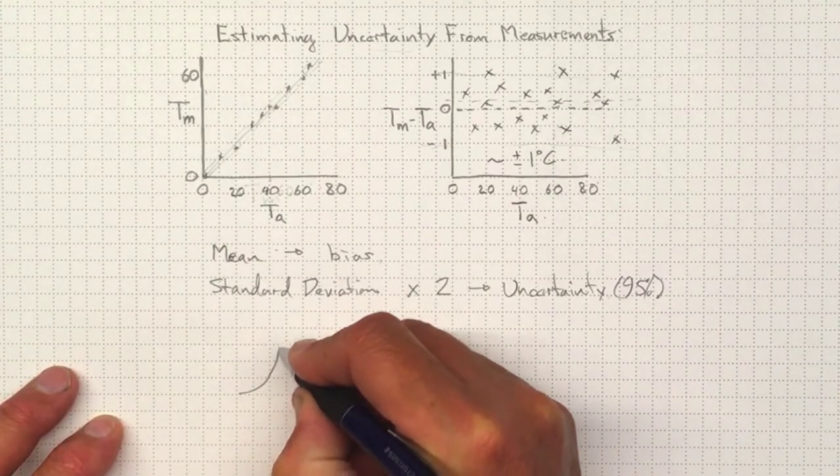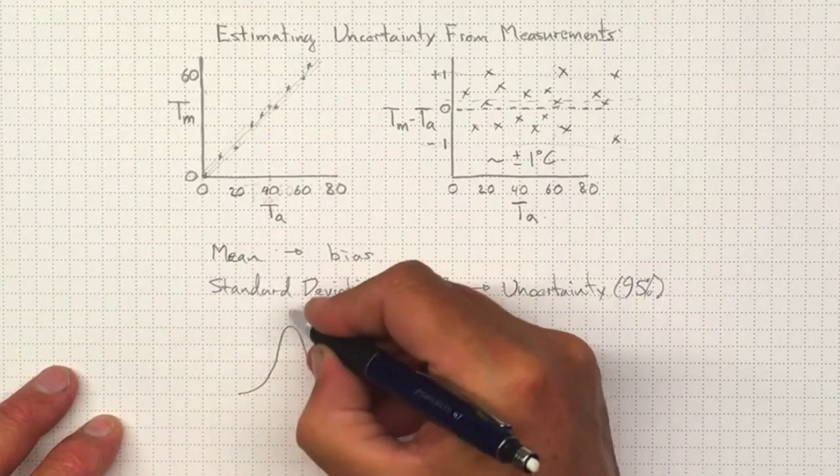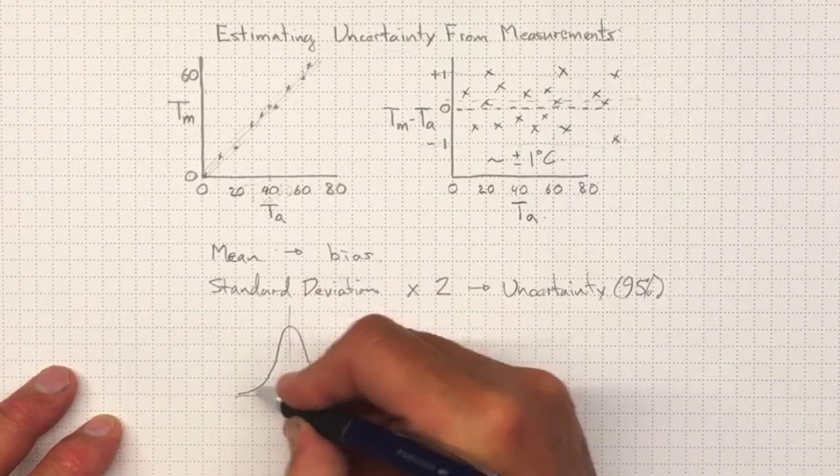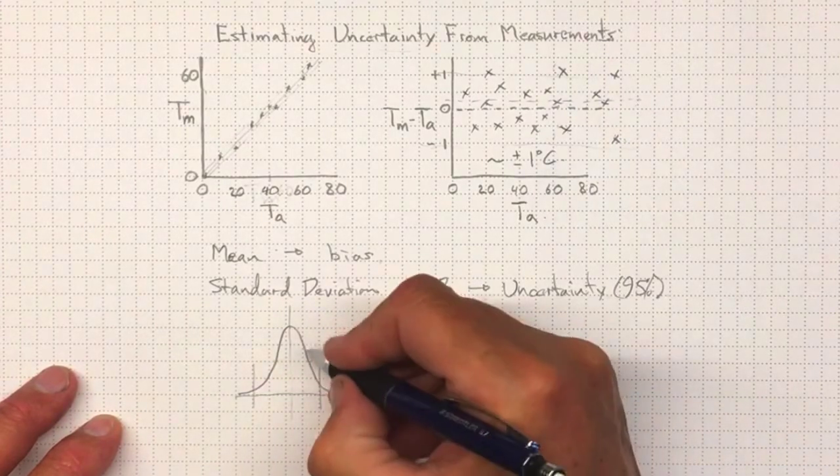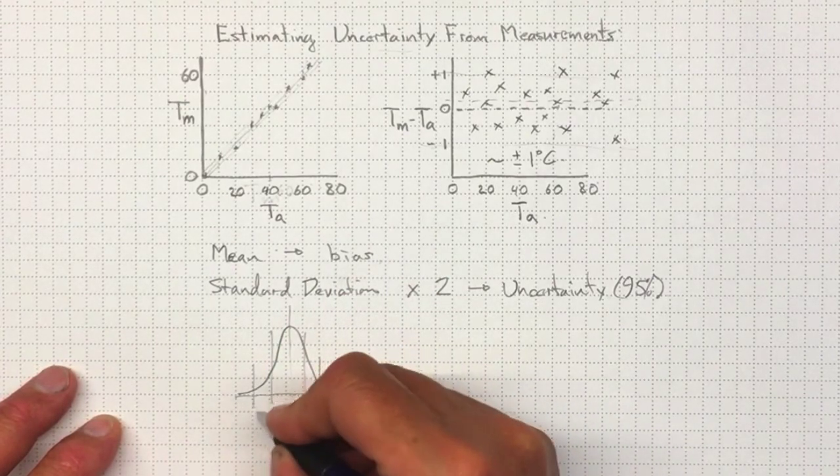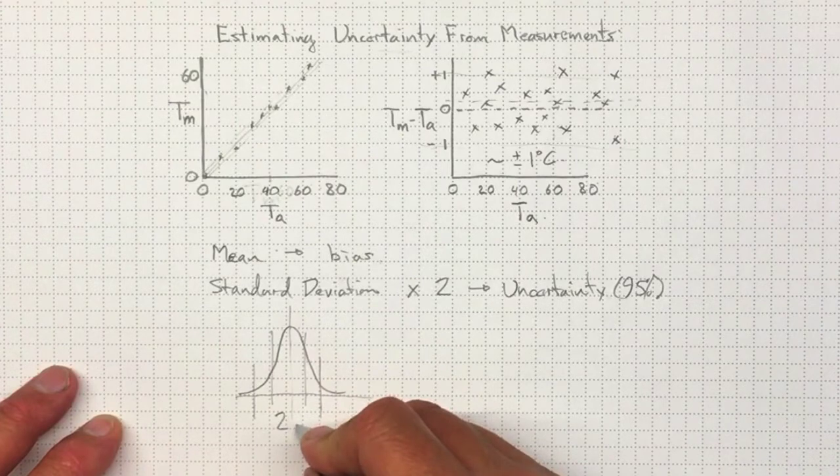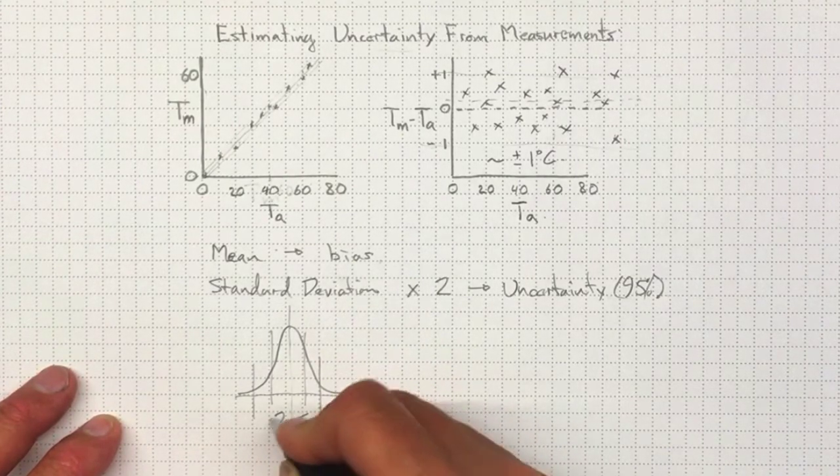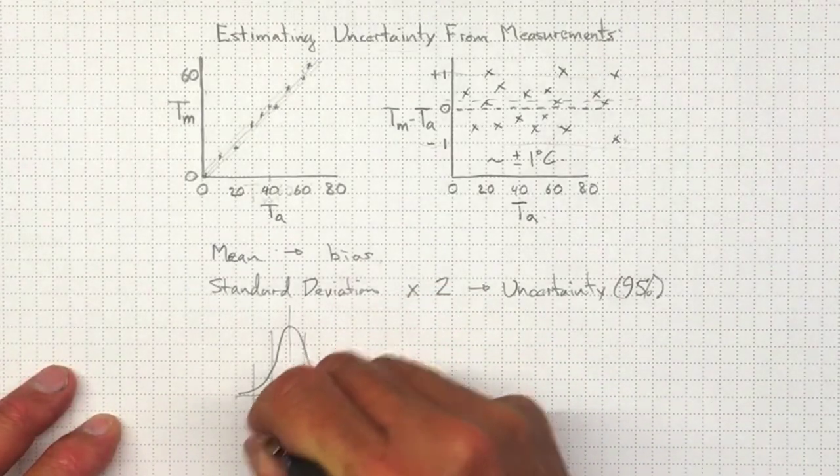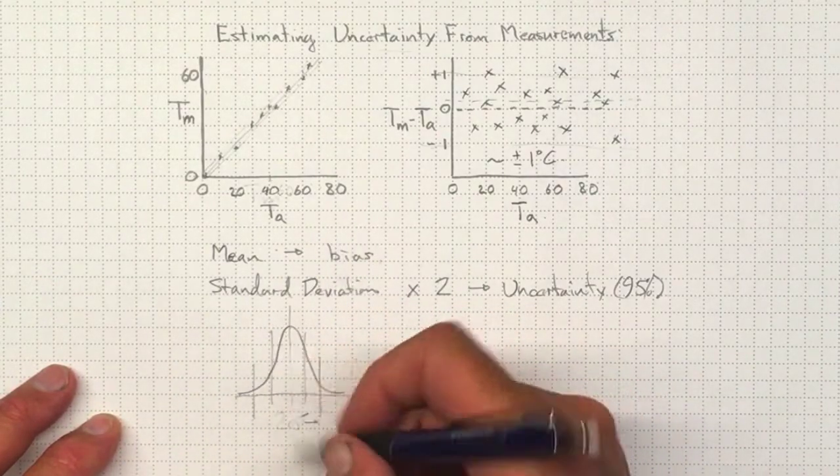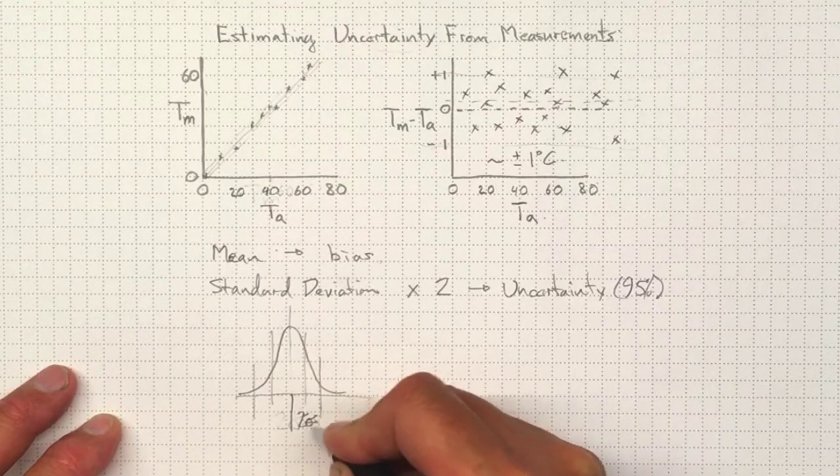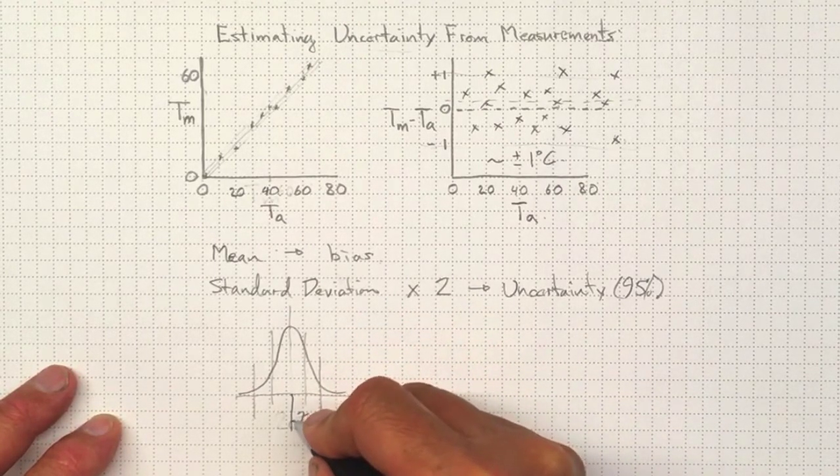And two times the standard deviation gives me my uncertainty at 95%. If I have a Gaussian distribution, I've got a curve that's got to shape something like that. There's the mean. And there's one standard deviation, holds about 68%. There's two standard deviations. So two times the standard deviation, oops, not all the way across. That would be four times. Two times the standard deviation out from the mean gives me my uncertainty.